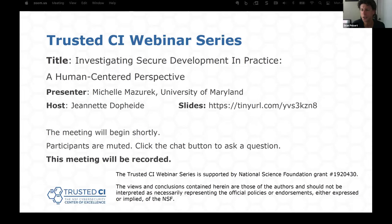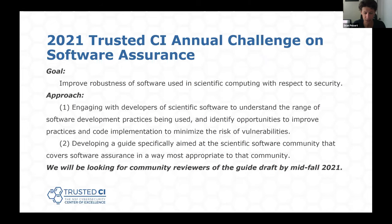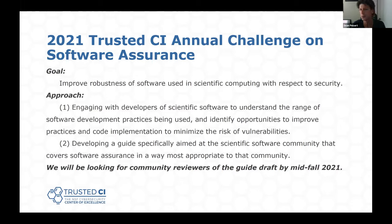Sean, welcome. Thanks so much, Jeanette. Good morning and good afternoon. My name is Sean Peisert. My day job is at the Berkeley Lab. I am also one of the co-leads of Trusted CI, and in the context of this presentation today, I am also the lead of the 2021 Trusted CI Annual Challenge on Software Assurance. The Trusted CI Annual Challenges are now an annual event where we take on an interesting and important problem to the community and do a deep dive on that particular subject. This year, our focus is on software assurance, where our goals are to improve the robustness of software used in scientific computing with respect to security. We have a two-pronged approach: the first half of the year we spent gathering insights on current practices, and in the second half we're developing a guide targeted at the scientific software community.